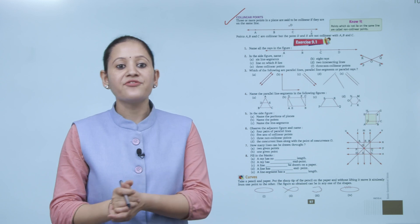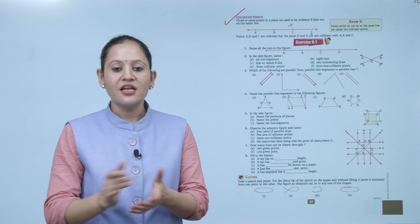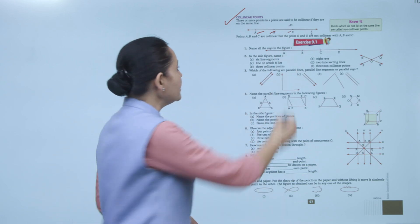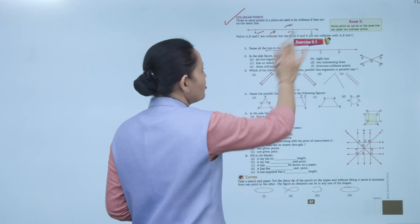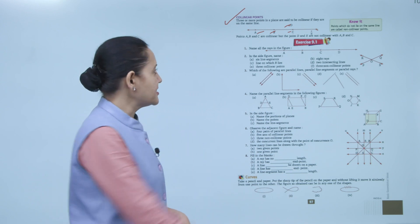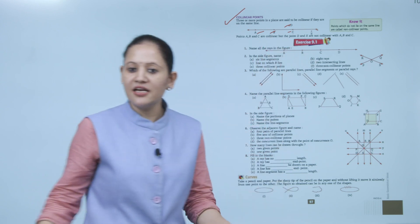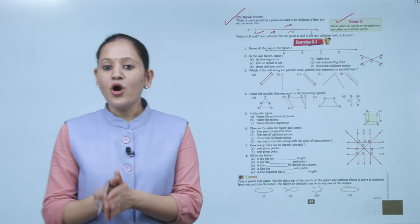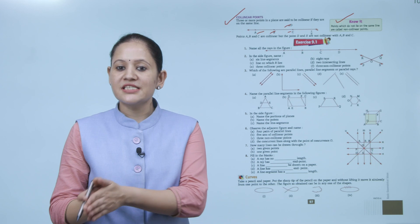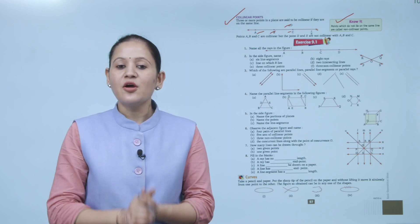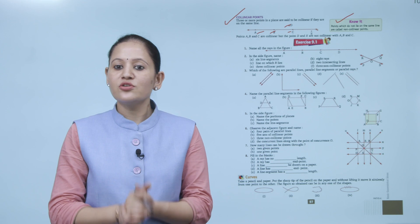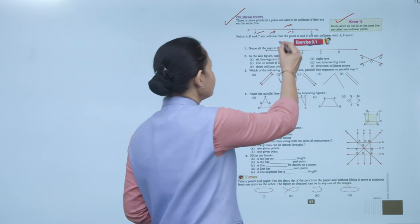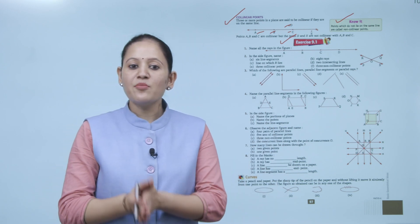Collinear points: three or more points in a plane are said to be collinear if they are on the same line. Points A, B, and C are collinear, but points D and E are not collinear with A, B, and C because they are not on the same line. Points which do not lie on the same line are called non-collinear points.